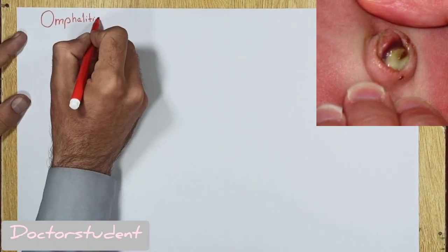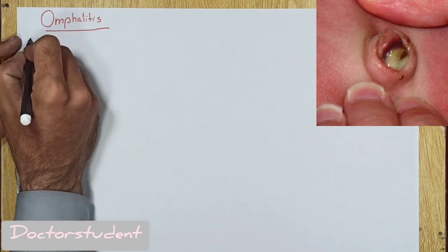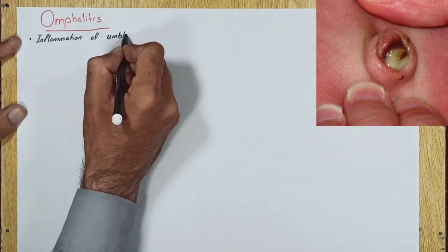Hello friends, today we will discuss omphalitis in newborns. First, the definition: inflammation of the umbilical cord is called omphalitis.